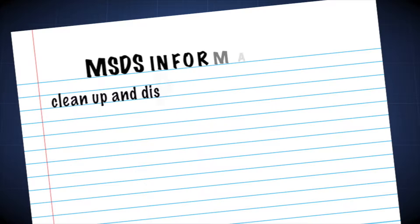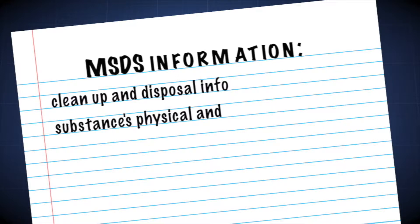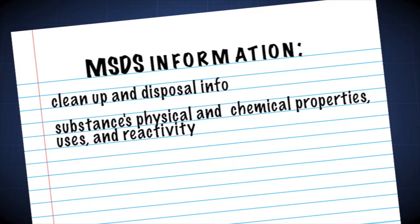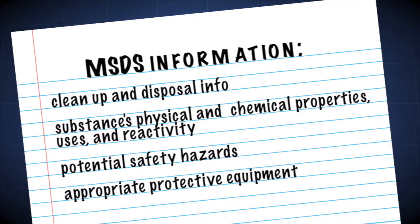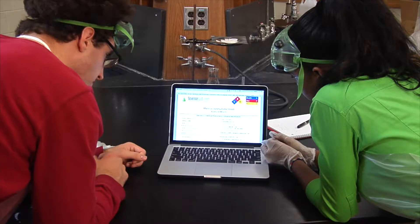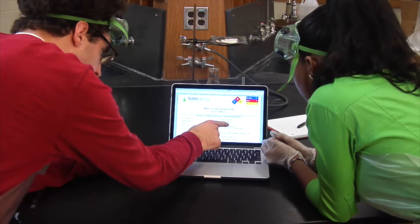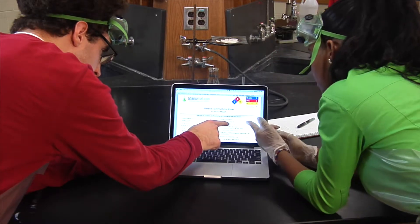In addition to cleanup and disposal information, the MSDS contains information about the substance's physical and chemical properties, its uses, reactivity, potential safety hazards, and the appropriate protective equipment necessary for safe handling of the substance. The MSDS sheets for most hazardous chemicals can be located online.